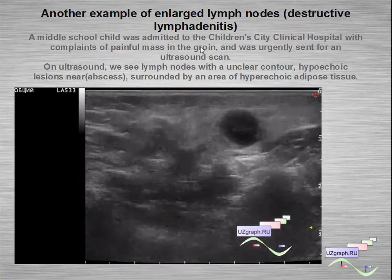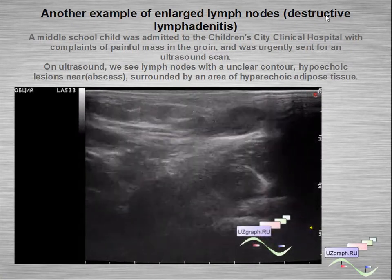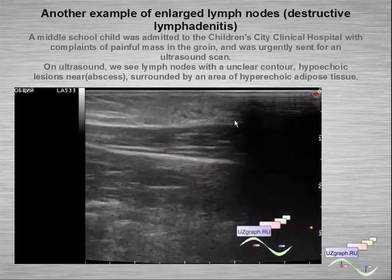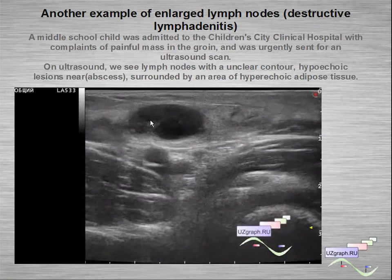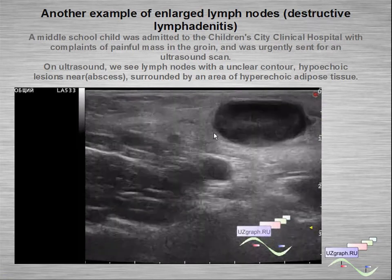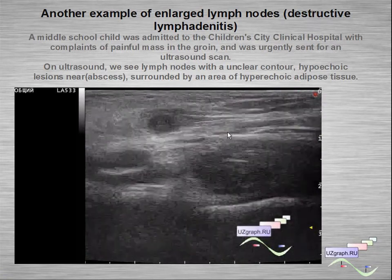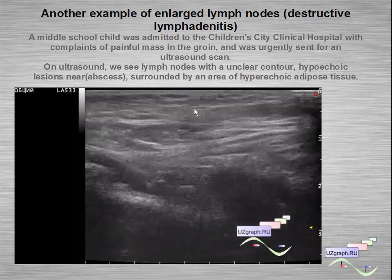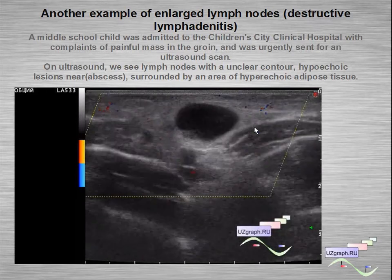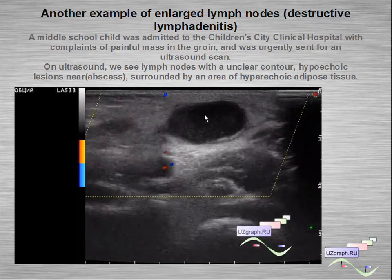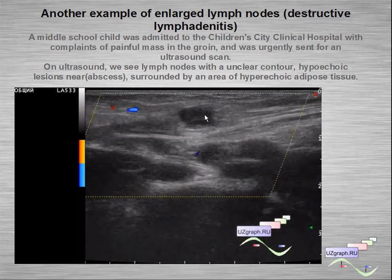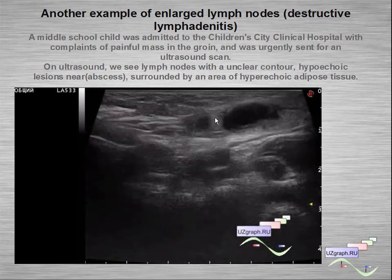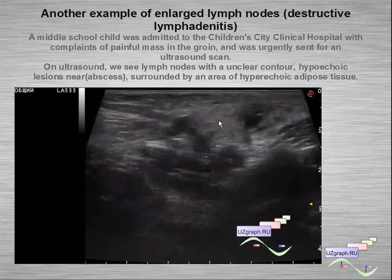Another example of enlarged lymph nodes with destructive lymphadenitis. We can see enlarged lymph nodes with unclear contour, some hypoechoic lesion around them, and hypoechoic fat tissue surrounding them. This is destructive lymphadenitis; the hypoechoic lesion is an abscess.